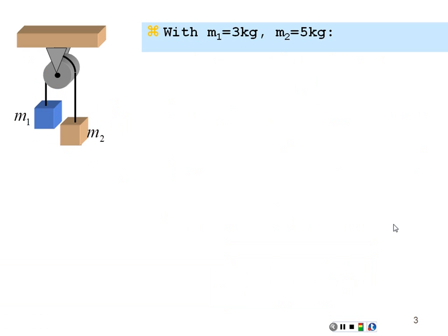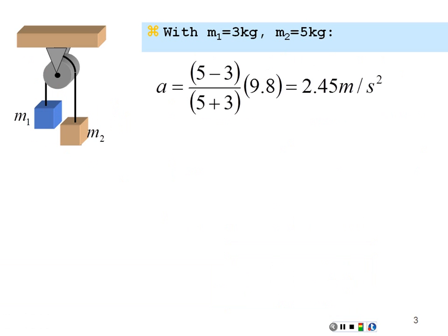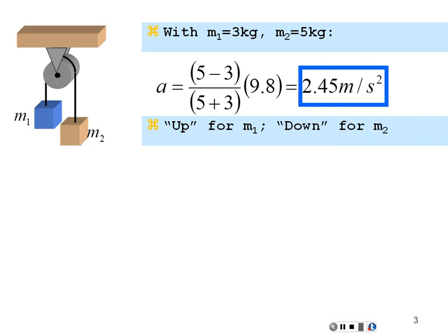With mass 1 equal to 3 kilograms and mass 2 equal to 5 kilograms, the acceleration will be (5 minus 3) over (5 plus 3), which is 2 over 8, or one-fourth of 9.8, giving 2.45 meters per second squared — upward for mass 1 and downward for mass 2.